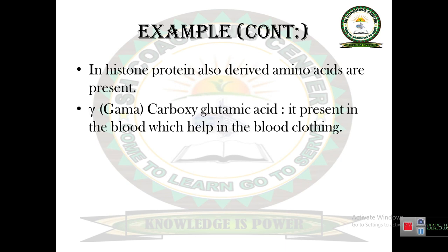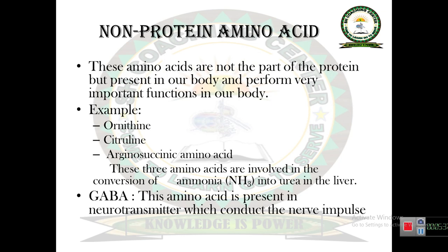Histone protein is present in DNA, which helps in the formation of chromosomes during cell division. A third example is gamma-carboxyglutamic acid, which is a very important amino acid present in the blood that helps in blood clotting — it stops bleeding.